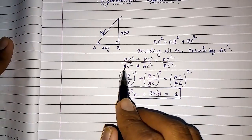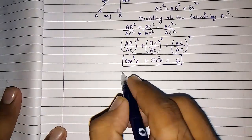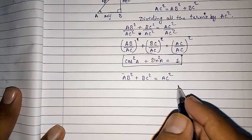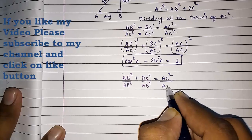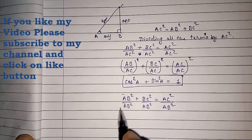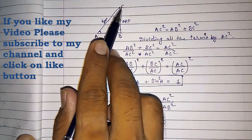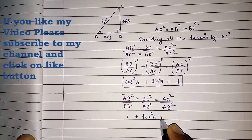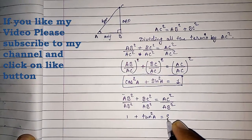Similarly, we can prove the second one. Here we divided all by AC²; now I am going to divide by AB². Look here, I am proving it. AB² plus BC² is equal to AC², given by Pythagoras. Now dividing all terms by AB²: (AB/AB)² + (BC/AB)² = (AC/AB)². AB/AB cancels to give one, so 1 + tan²A equals sec²A, since BC/AB is opposite by adjacent giving tan, and AC/AB is hypotenuse by adjacent giving sec. This is our second identity.